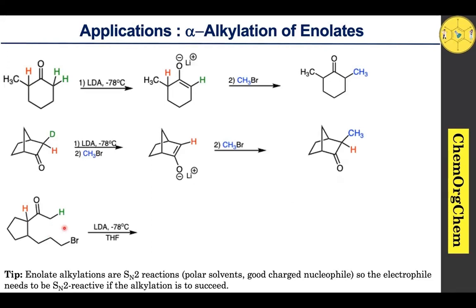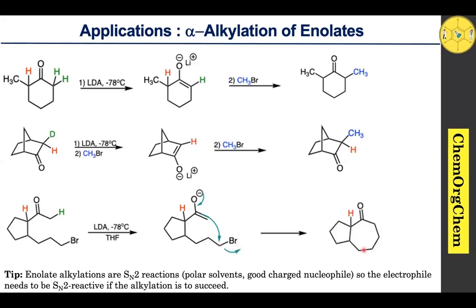In this ketone, when LDA is used, it selectively abstracts the proton from the less hindered site — this site is sterically crowded compared to the other site. So LDA takes the proton from the less hindered site, generating the corresponding enolate ion. Once the enolate ion is generated, the electrons move towards the adjacent carbon, followed by the pi electrons attacking the bromine-bearing carbon, which leads to kick off the bromine atom to yield the cyclized ketone as a product.